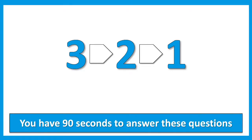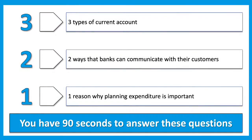Our next activity is a little bit different — you have 90 seconds to answer these questions for the length of time that the music is playing. We're going to ask for three types of current account, two ways the bank can communicate with customers, and one reason why planning expenditure is important.